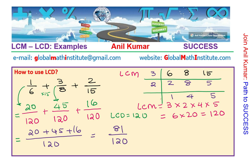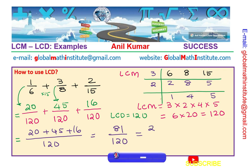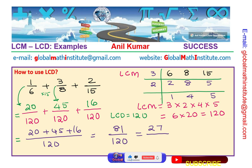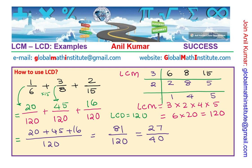81/120 has a common factor, so it's good practice to simplify. Dividing numerator and denominator by 3: 81 divided by 3 is 27, and 120 divided by 3 is 40. So the final simplified answer is 27/40 as the sum of these three fractions.